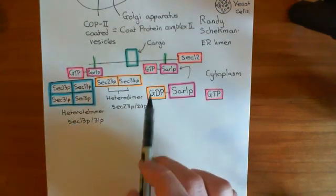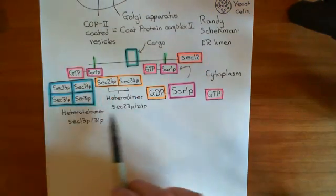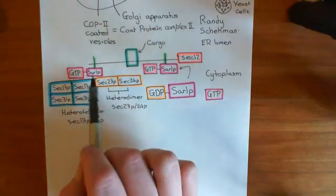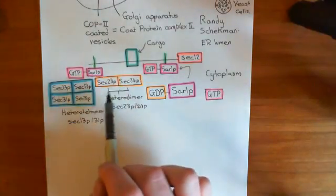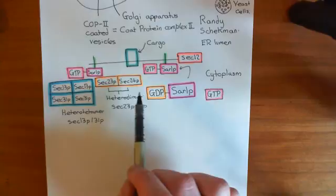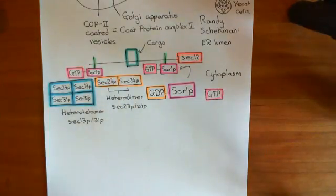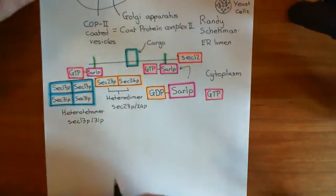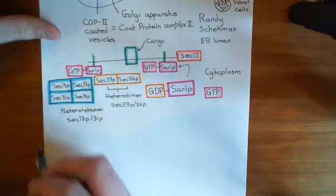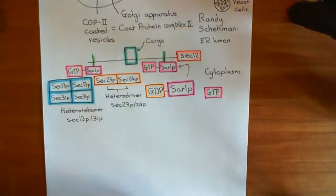Now, this entire protein complex here now, consisting of the SAR 1p in the membrane and the sec-23p-24p heterodimer, along with the sec-13p-31p heterotetramer, this is the COP-2 protein complex. So all of this.